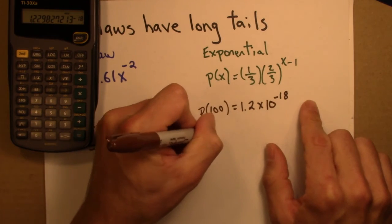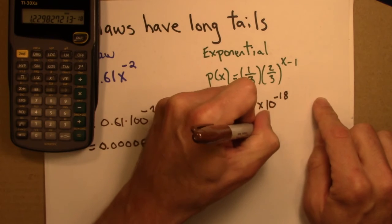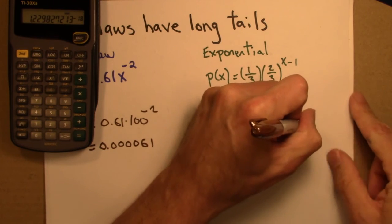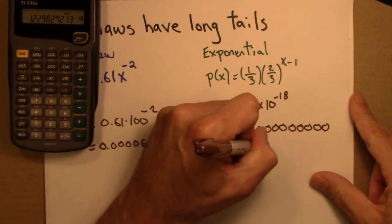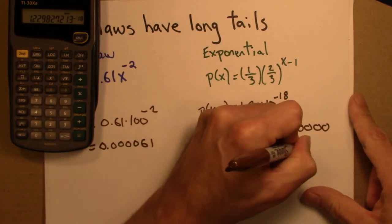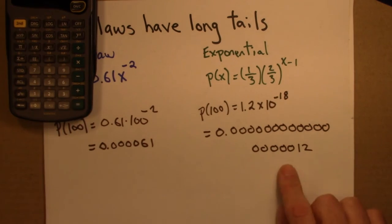And just for fun, let's see what that is. 1, 2, 3, 4, 5, 6, 7, 8, 9, 10, 11, 12, 15, 14, 15, 16, 17. Indistinguishable from 0.